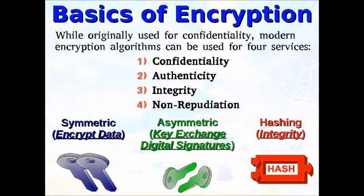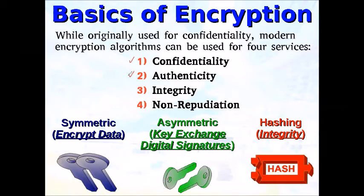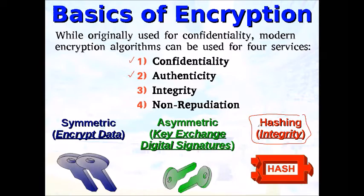Spock explains: with symmetric encryption, what most people think of, I can encrypt data. If you and I were the only two people with the keys to the filing cabinet, and you open it and see something you didn't put in there, not only do we have a secret message, you also know that message came from me. So with symmetric encryption, we can have both confidentiality and authenticity.